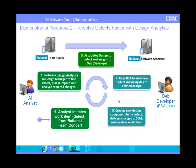In this demonstration scenario, we'll introduce Al and Dev. Al is our analyst who will initiate a work item from Rational Team Concert, perform the design analytics in Design Manager to find the defect, assess the impact, and then associate that design to the defect and assign that work item to Dev, the developer. Dev, a user of Rational Software Architect, uses RSA to view that new defect, navigates to the related design, and then creates a new design component to fix that defect and delivers the changes.